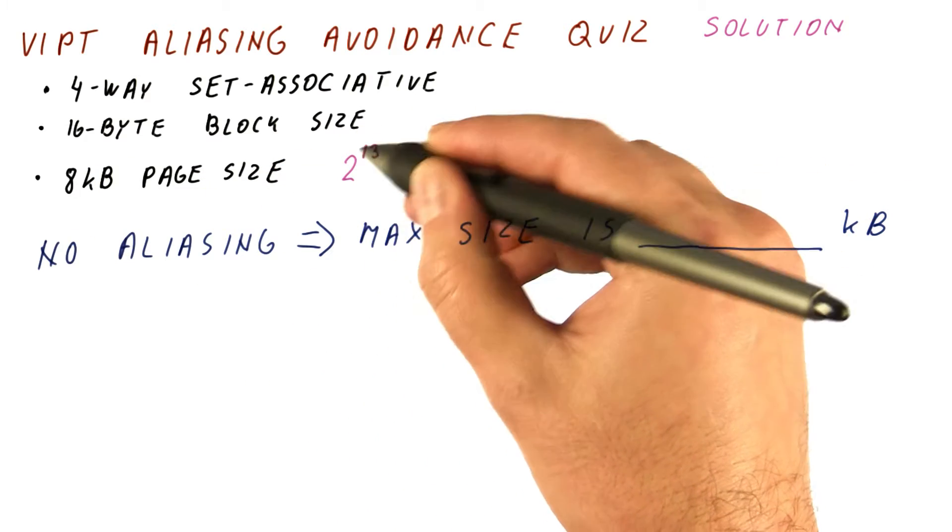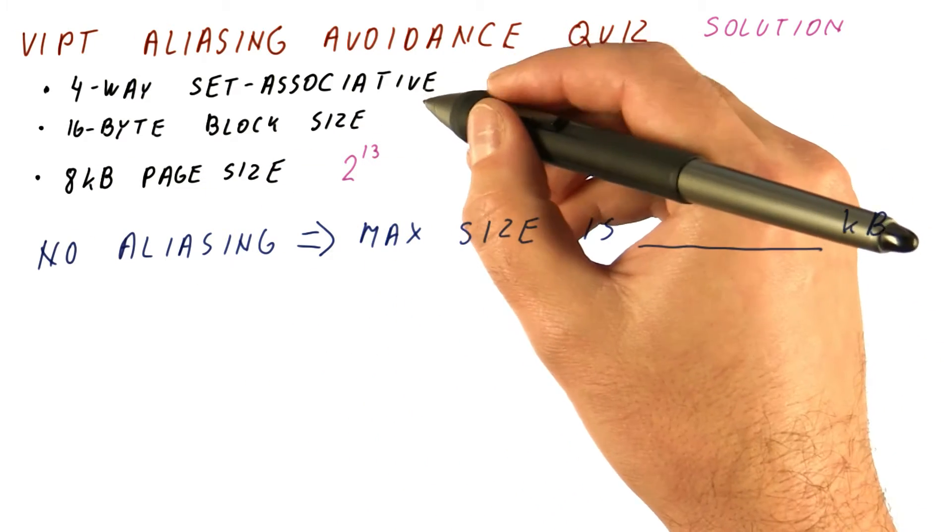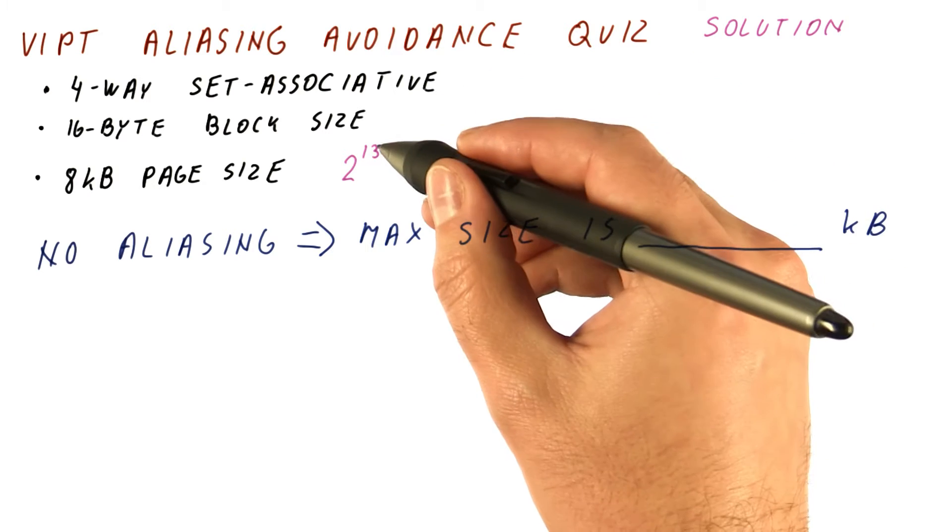The page has 2 to the 13th bytes, so the page offset has 13 bits.